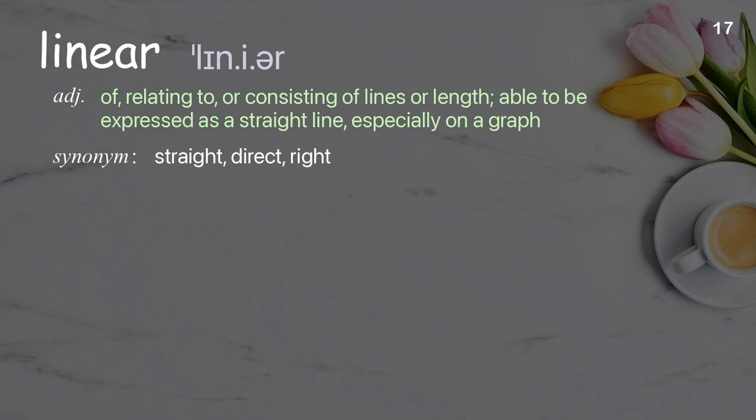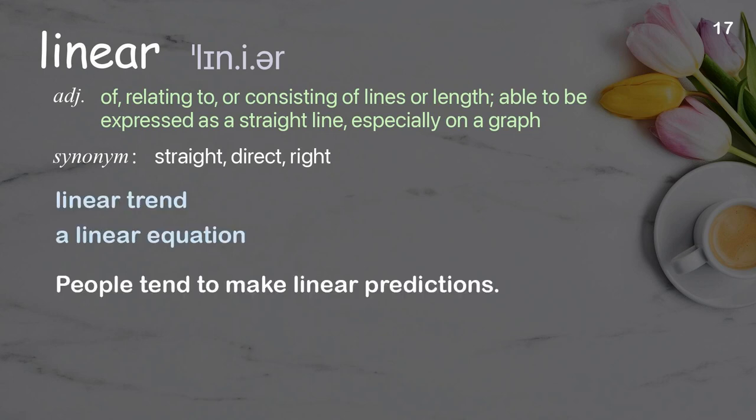Linear: of or consisting of lines or length; able to be expressed as a straight line, especially on a graph. Examples: linear trend, a linear equation. People tend to make linear predictions.